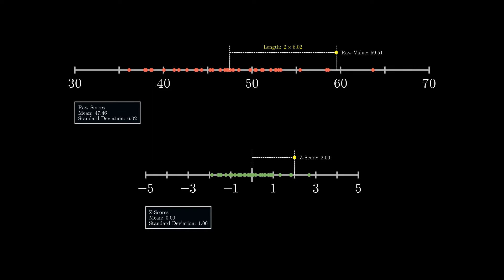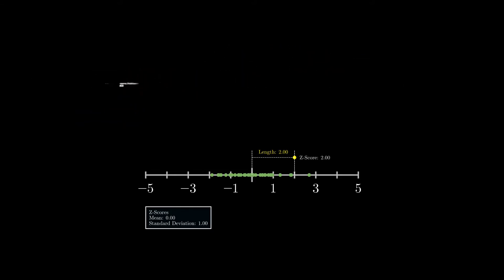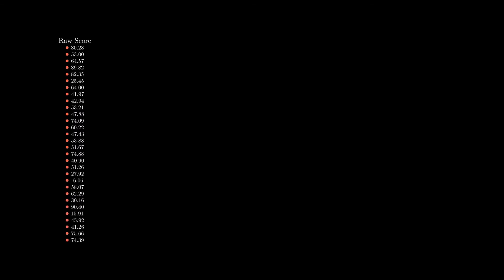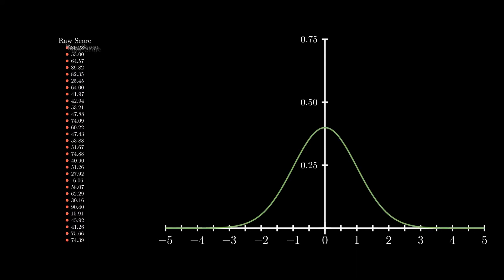This is because of the factor of two which is multiplied to the standard deviation of the raw values. With this in mind, we can visualize our raw scores by converting them to z-scores, fitting them more appropriately to the scale used by the standard normal distribution.